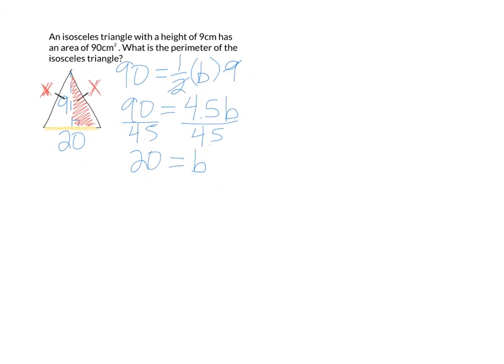I am going to chop this base in half because every height of an isosceles triangle bisects the base. So I basically have a right triangle with a height of 9 and a base of 10. And now I'm going to figure out what that hypotenuse is.